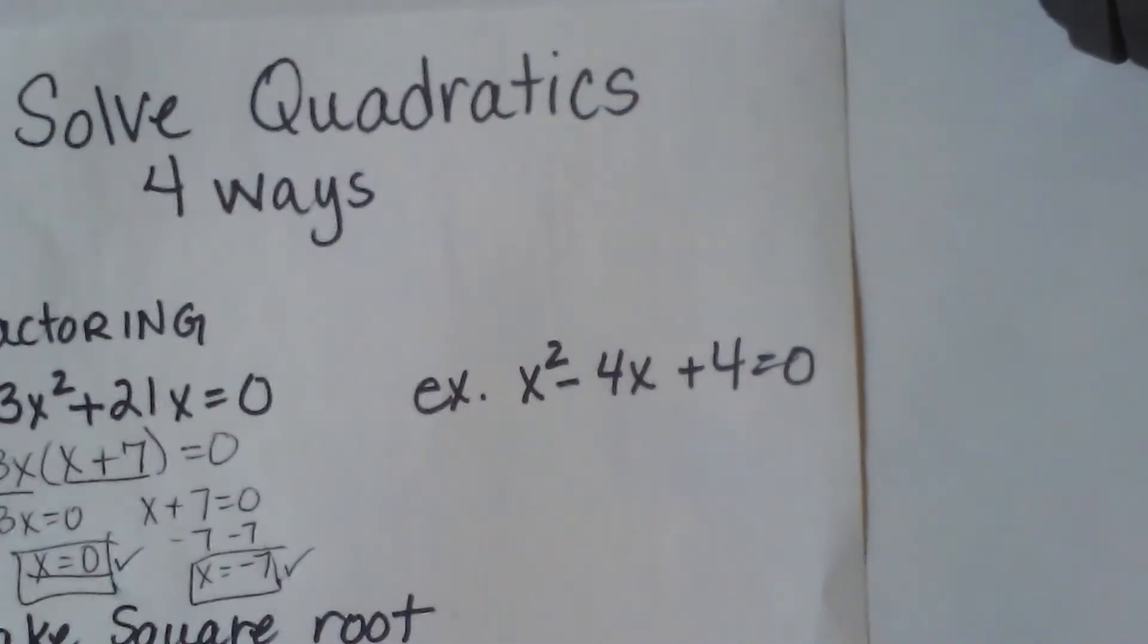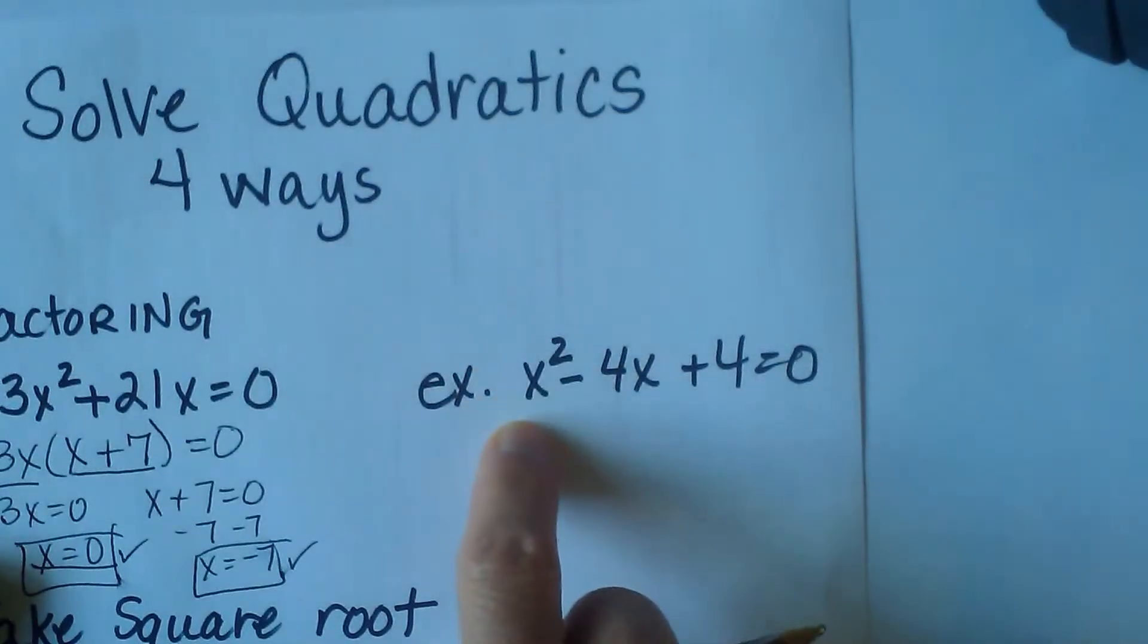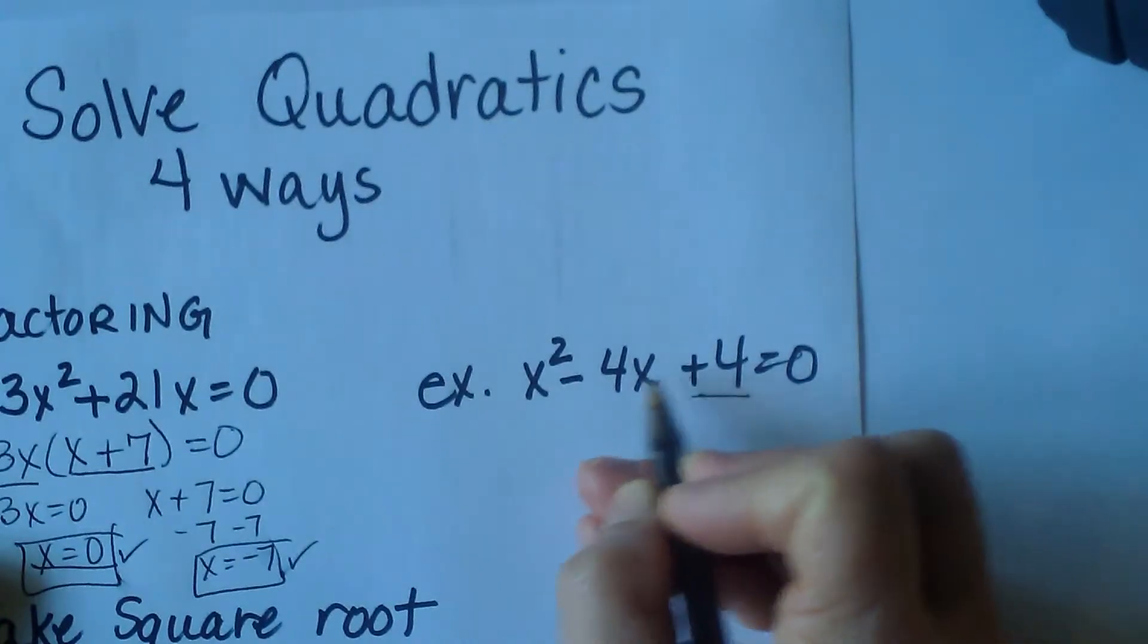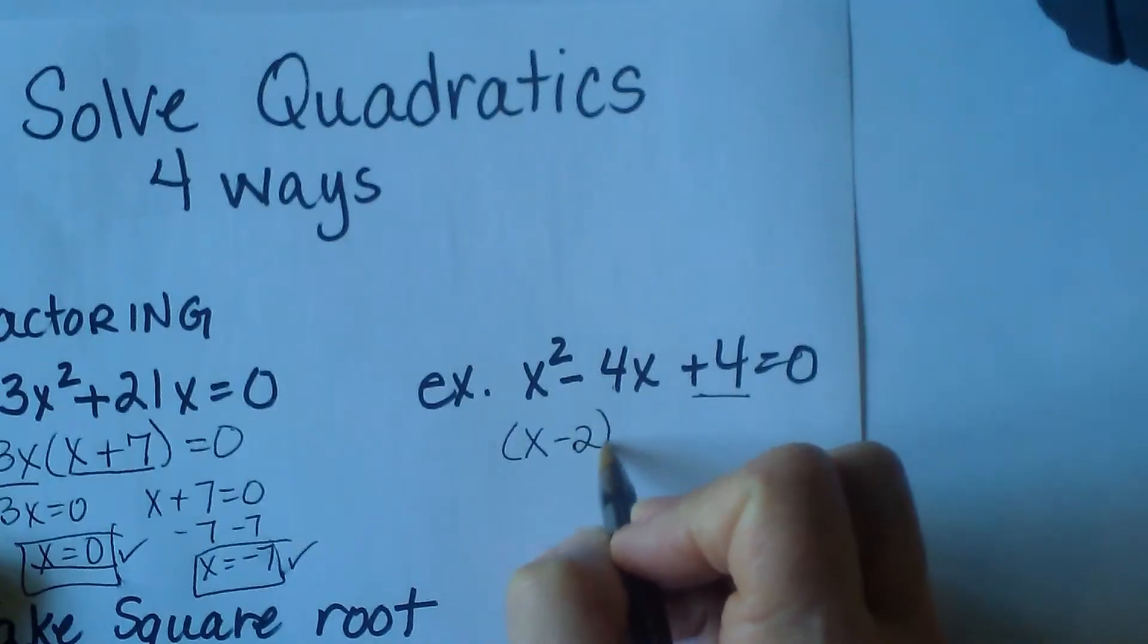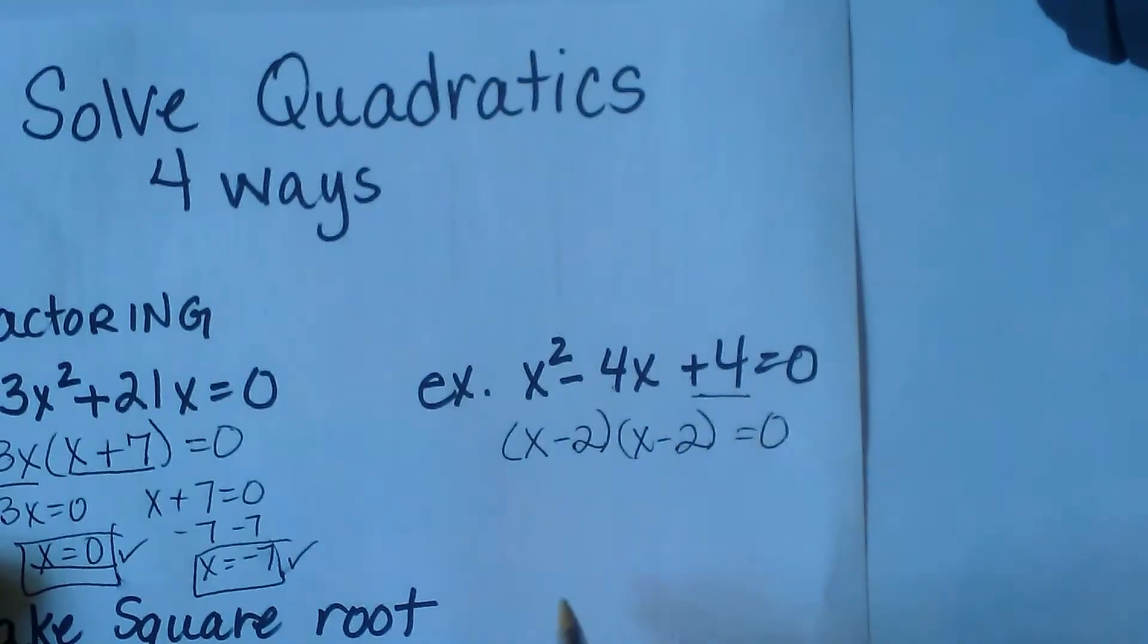Let's look at a second factoring problem. This one's a trinomial with a lead coefficient of 1, so we're going to try the simple method. What multiplies to positive 4 but adds to negative 4? Well, that's going to be x minus 2 times x minus 2 equals zero.